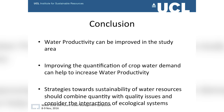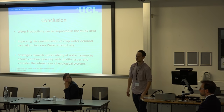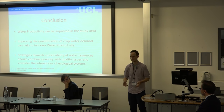The main conclusions are that water productivity can be improved in the study area. Improving the quantification of crop water demand helps to increase the efficiency of water use. Strategies toward sustainability of water resources should combine quantity and quality issues and look at the whole system — because it doesn't help to improve water productivity with more fertilizers if that comes at the expense of water quality. We always need to look at the big picture.